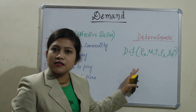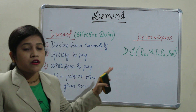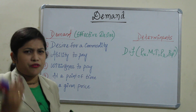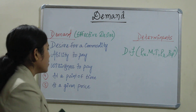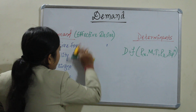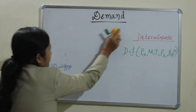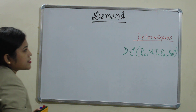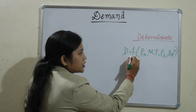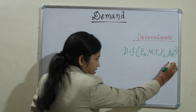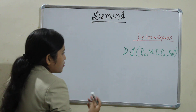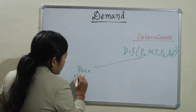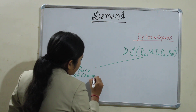What are the determinants of demand? Determinants means what are the factors which cause changes or affect the demand. Demand is a function of these determinants. The first one is price of commodity.